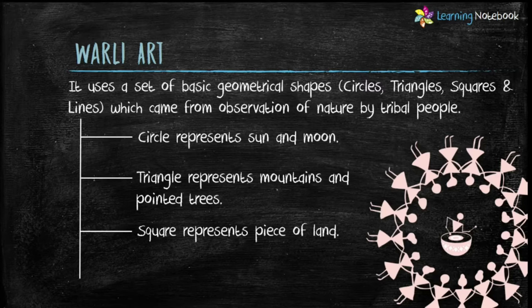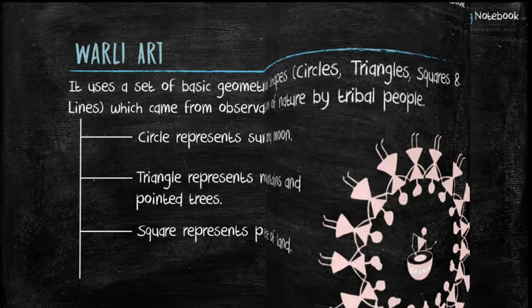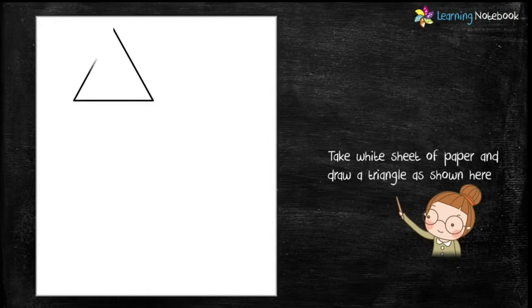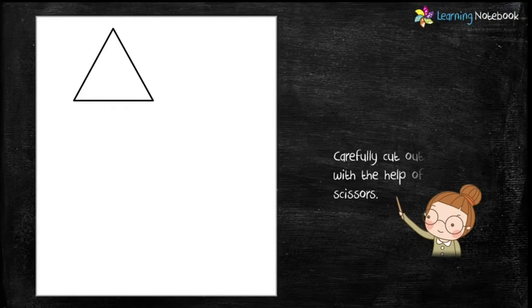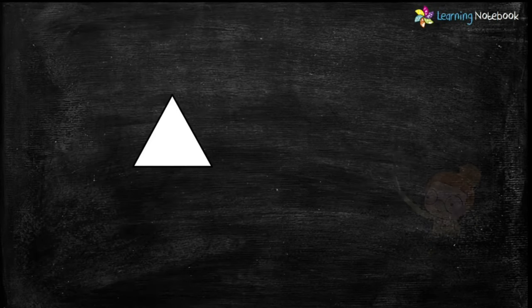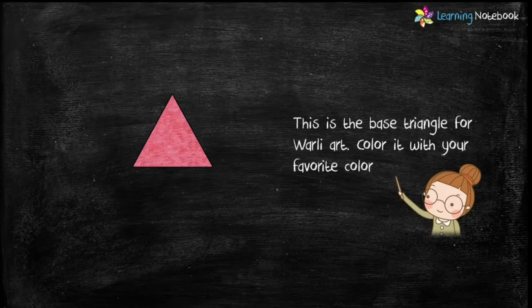So students, now let's make this magical worldly art by using basic geometrical shapes. Take the A4 white sheet and draw a triangle as shown here. Now carefully cut out this triangle using a pair of scissors. Students, this is the base triangle for worldly art. Color this triangle with your favorite color.